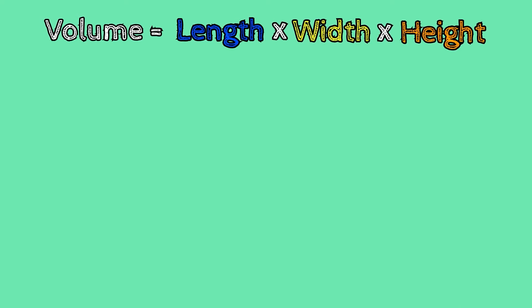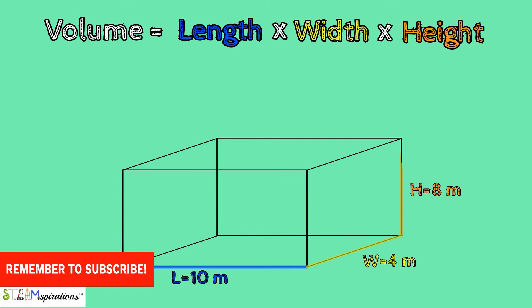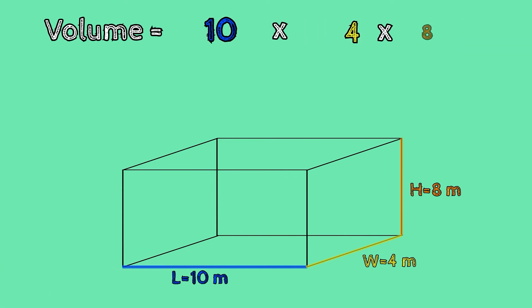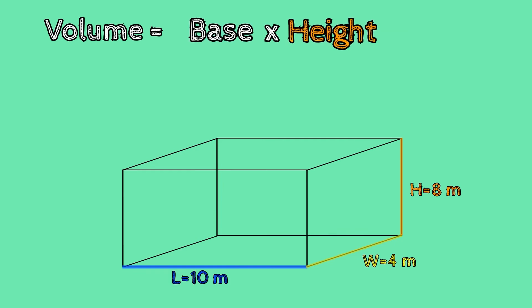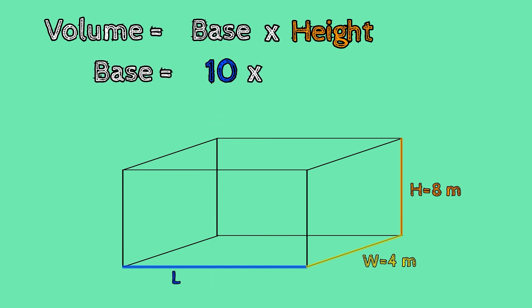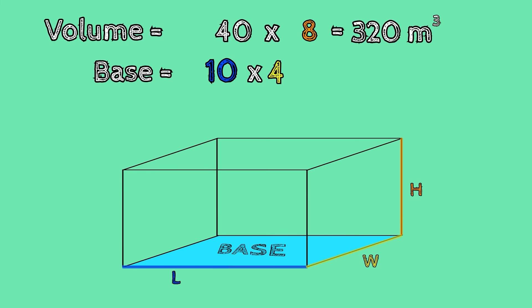If you were asked to find the volume of a rectangular prism that has a length of 10 meters, a width of 4 meters, and a height of 8 meters, we would use our formula to multiply 10 times 4 times 8. The volume would be 320 cubic meters. We could also use the formula base times height to find our answer. To find the base, we would first multiply 10 times 4, then multiply our base, which is 40, by the height, which is 8. Our answer would also be 320 cubic meters.